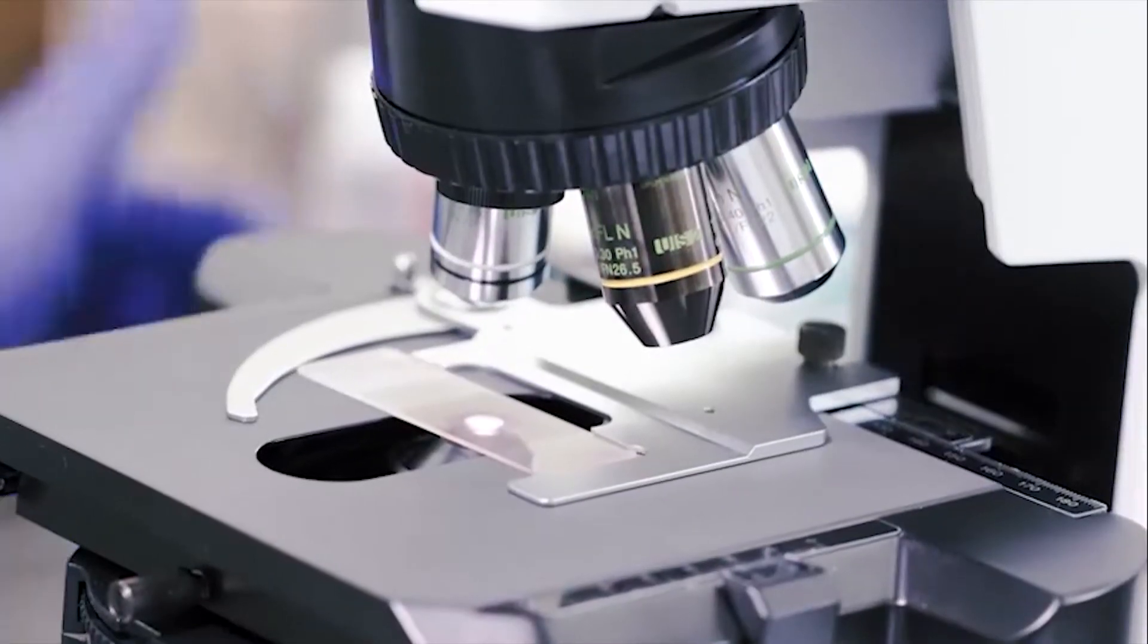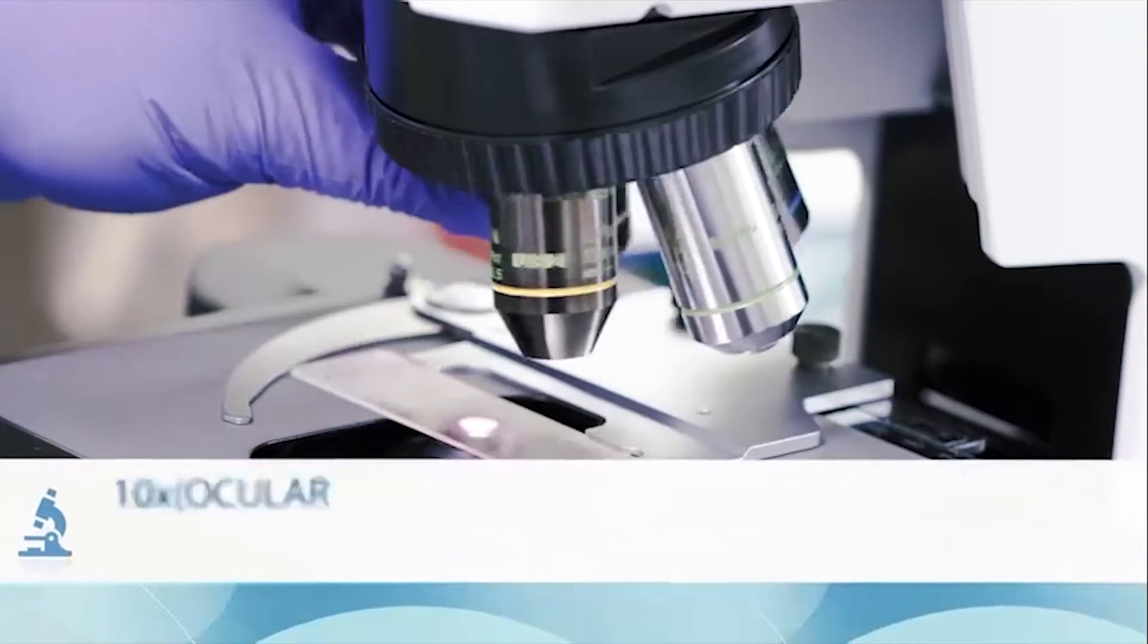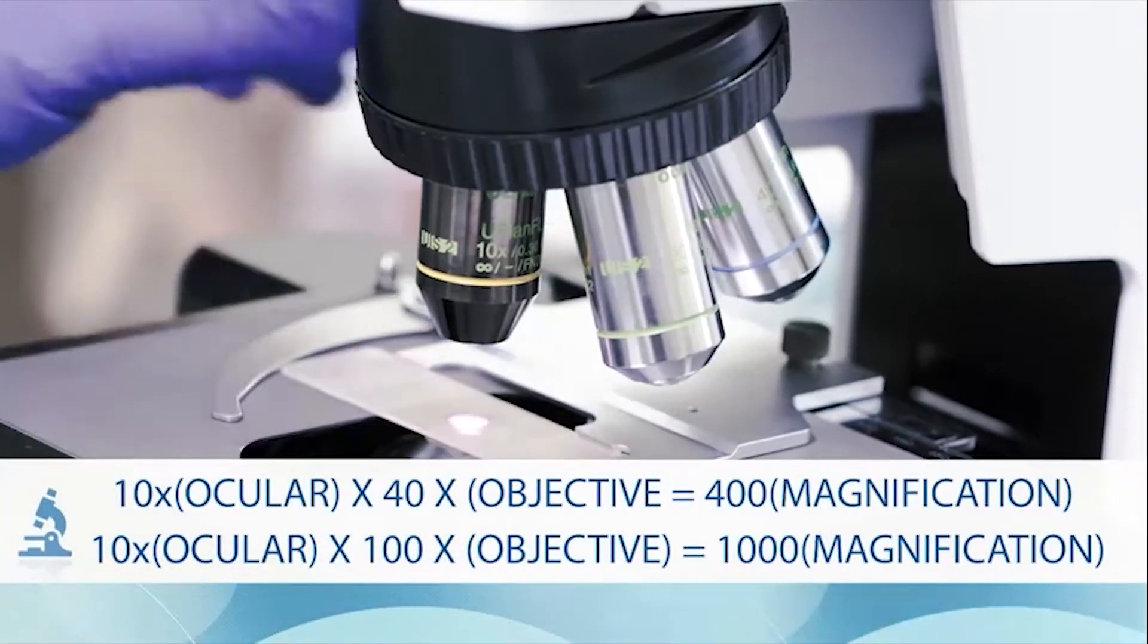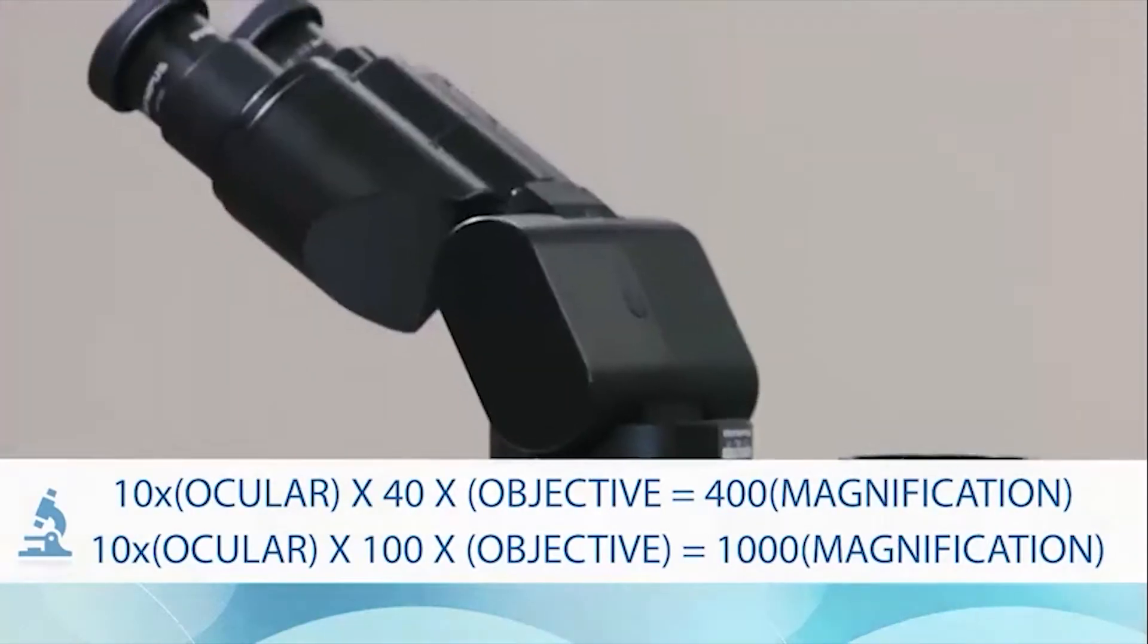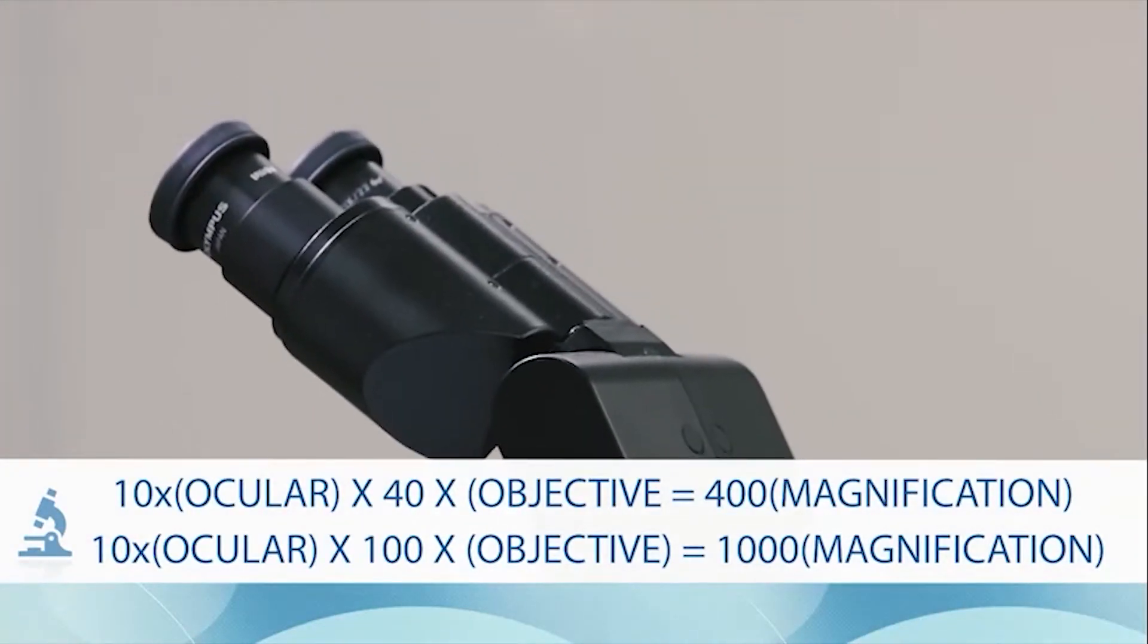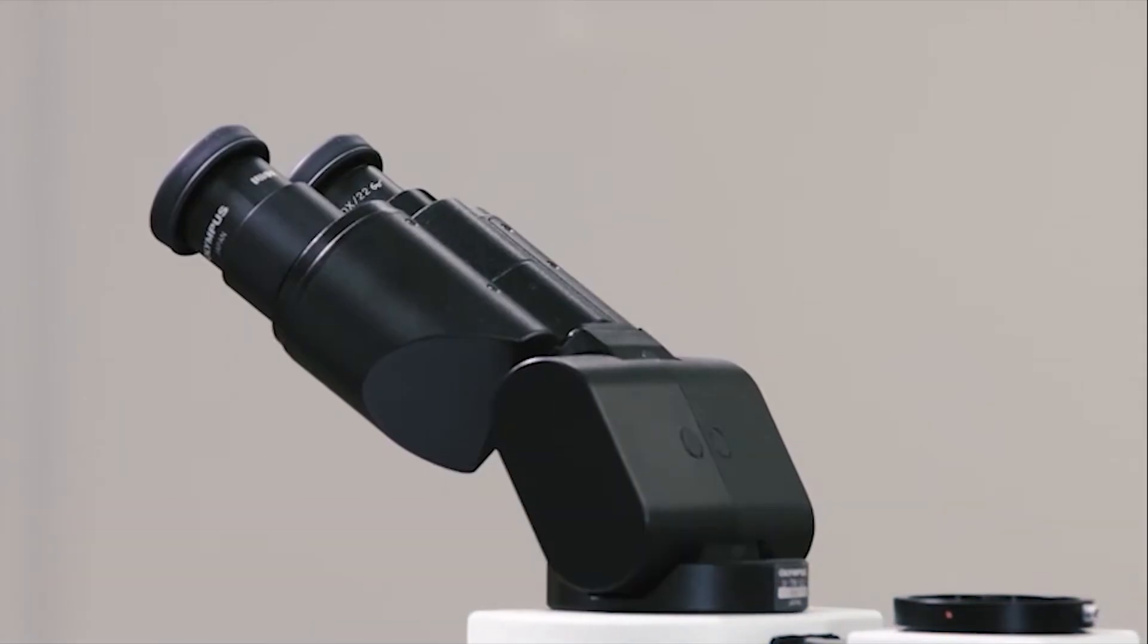To determine the total magnification of an object you see in the ocular, you multiply the magnifying power of the objective lens, which is either 10x, 40x, or 100x, by the magnification of the ocular lens, which is 10x.